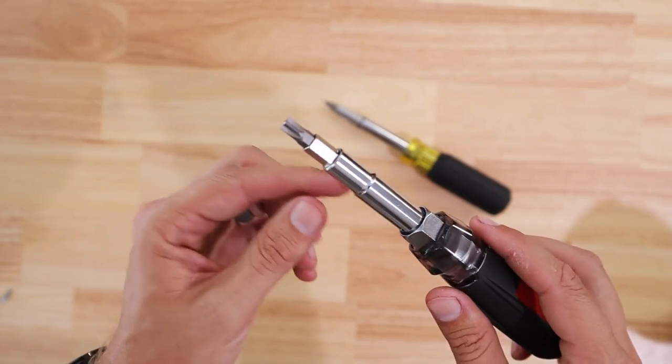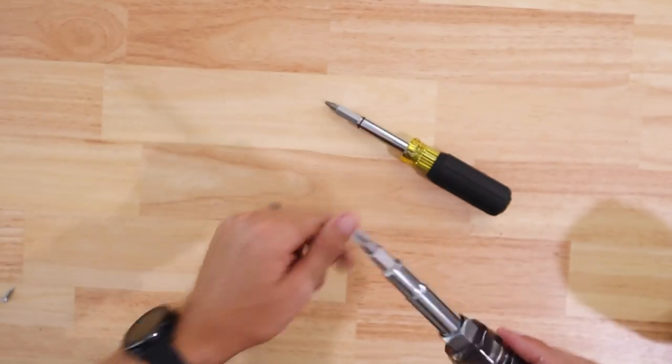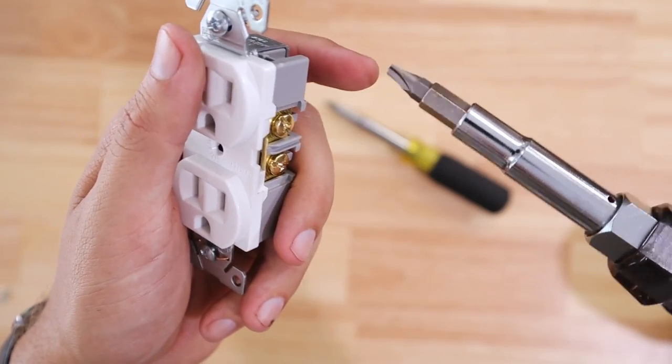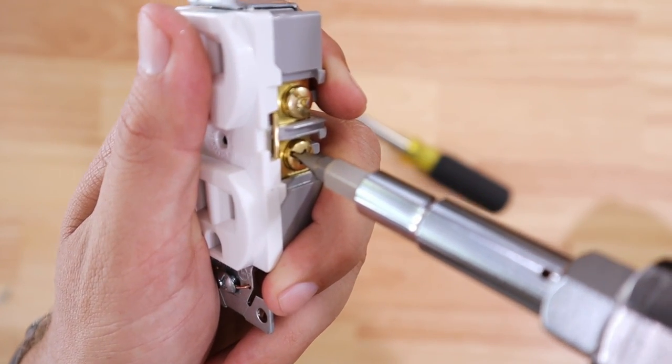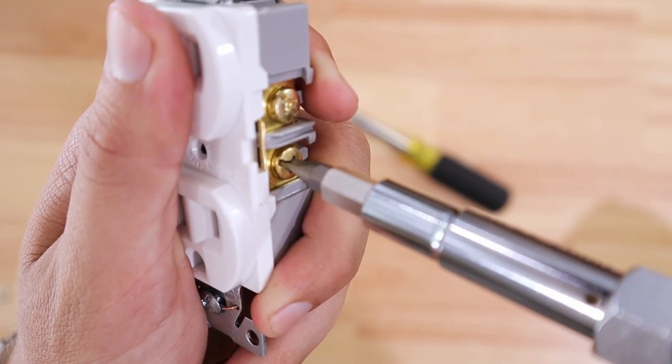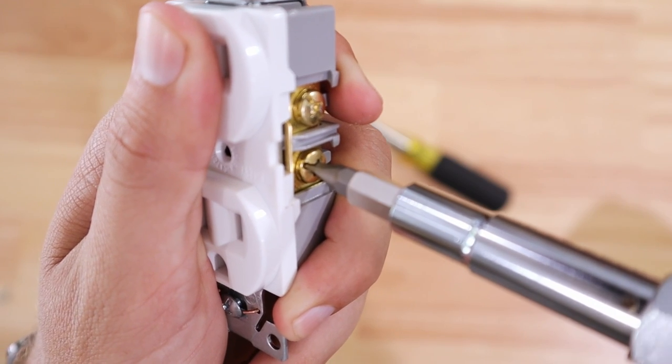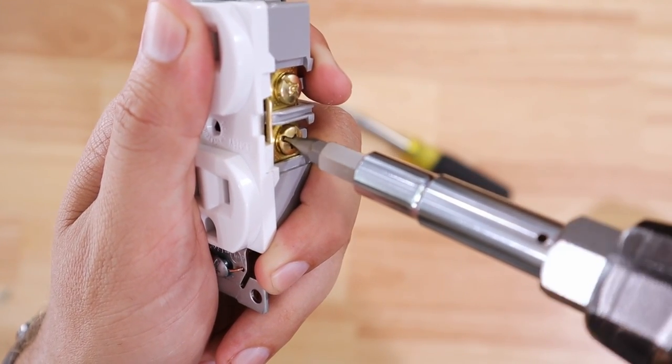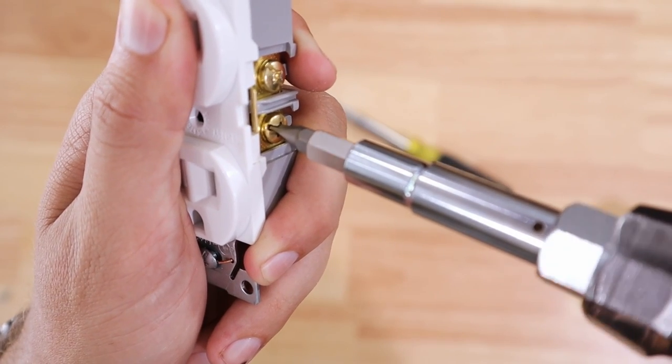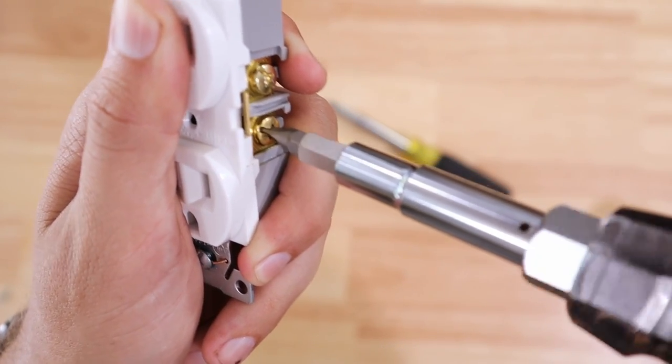I'll just show you the biggest difference that I found between the ECX and the Klein. So the biggest difference I found between these two particular bits is that when I go to put it into the terminal screw, when I go to wiggle it to see how much play there is between the end of the bit and the inside of the terminal screw, you can see I've got a little bit of play there.